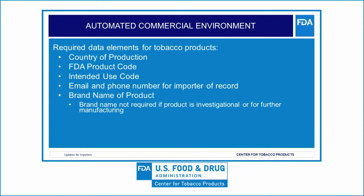If a product you import has been detained by FDA, please use the FDA's Office of Regulatory Affairs Headquarters Directory to identify the appropriate individuals to contact to help you understand why your product has been delayed or detained. For all FDA-regulated products, including tobacco products, importers are required to submit the FDA country of production, the complete FDA product code, the full intended use code, and a telephone number and email address for the importer of record.